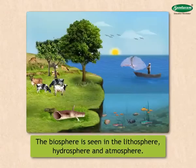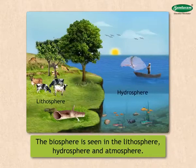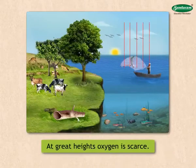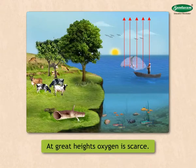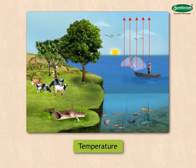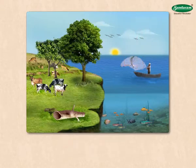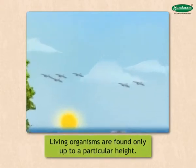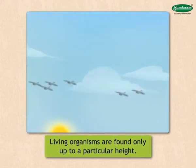The biosphere is seen in the lithosphere, hydrosphere and atmosphere. At great heights in the atmosphere, oxygen is scarce. Levels of humidity, pressure and temperature are also low. Therefore, living organisms are found only up to a particular height.